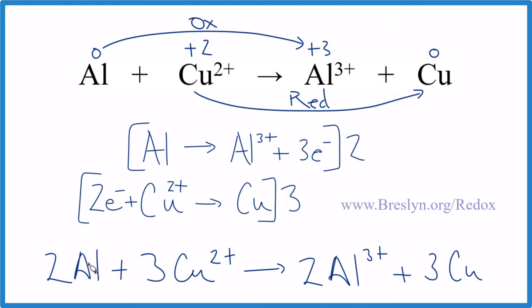You can check the atoms. We have two aluminums here, two aluminums here, three coppers, three coppers. Atoms are balanced and charged. We have three times two plus, that's six plus. Two times three plus is six plus. Charge is the same on both sides.